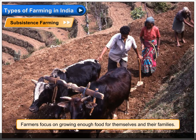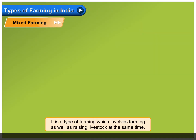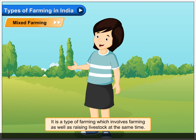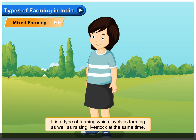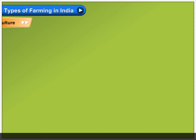Mixed farming: it is a type of farming which involves farming as well as raising livestock at the same time. It also includes forestry, fruit cultivation, dairy, poultry, mushroom farming, beekeeping, etc., along with the production of crops.